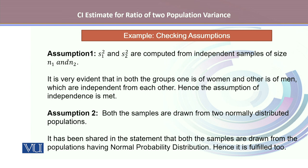The second assumption speaks about two samples coming from the population that follows the normal distribution. It has already been shared in the statement that both samples are drawn from the population having normal distribution. If it hadn't been given, we would simply test for the goodness of fit. Hence, the second assumption is fulfilled too.